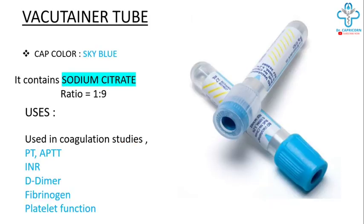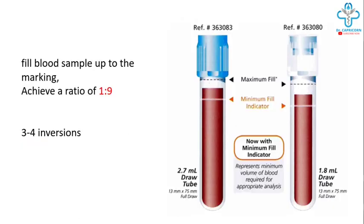Next, take the sky blue color cap vacutainer tube. It contains sodium citrate and is used in coagulation studies such as PT, APTT, INR, D-dimer, fibrinogen, and platelet function. Fill the blood sample up to the marking to achieve a ratio of 1 to 9, and 3 to 4 inversions are required.